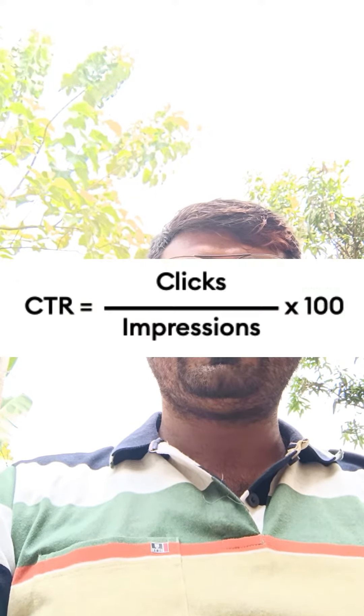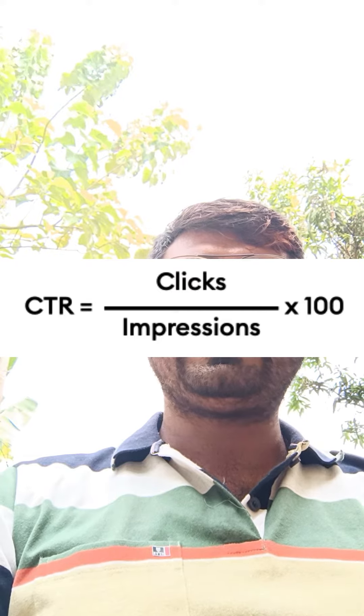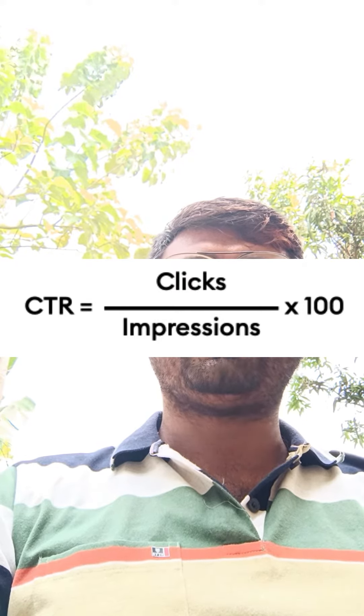Let's learn about CTR in digital advertising. The full form of CTR is click-through rate. It's a percentage rate of people clicking your online advertisement after viewing it. The CTR equation is clicks divided by impressions.